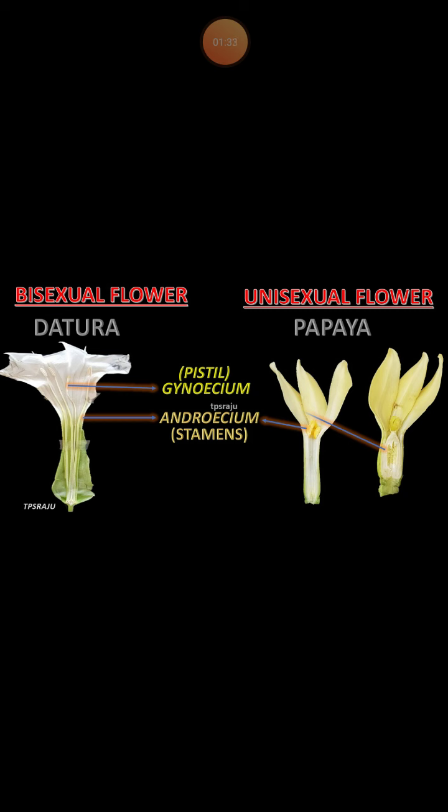The ovary of the carpel bears ovules inside. Inside the ovary you can see ovules, which enclose the egg cells — the female gametes. The stamen and the carpel are the male and female parts of the flower respectively.